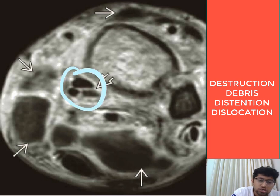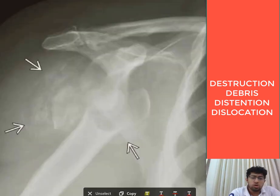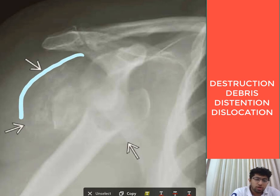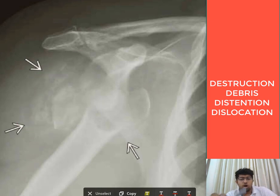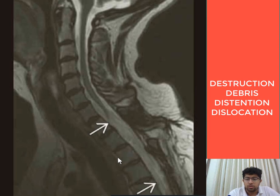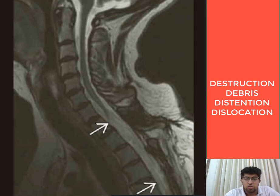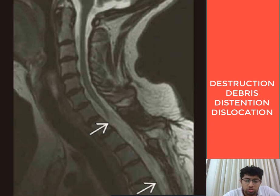This shoulder joint case shows distension of the subacromial bursa with debris inside, along with destruction of the humeral head. The MRI demonstrates syringomyelia, which is the cause of the neuropathic joint or Charcot's joint in the shoulder.